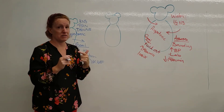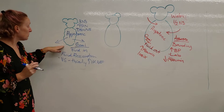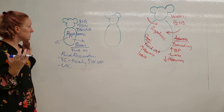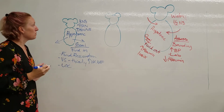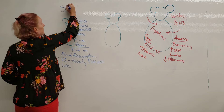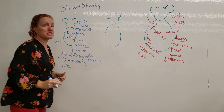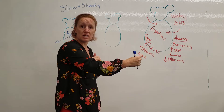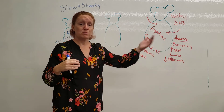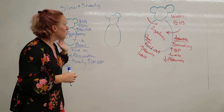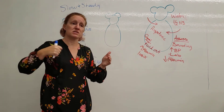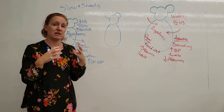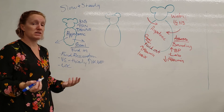One important thing to monitor is level of consciousness — watch how their mentation is doing, whether their mental state is declining. When doing fluid resuscitation, slow and steady is key. It's not the slow chronic change in fluid status that causes a huge problem — your body accommodates gradually — but it's the sudden fluid shift that causes problems. If we slam fluid in suddenly, cells don't know how to handle it and can rupture. If we pull fluid out too fast, cells shrivel up and can't do their job.